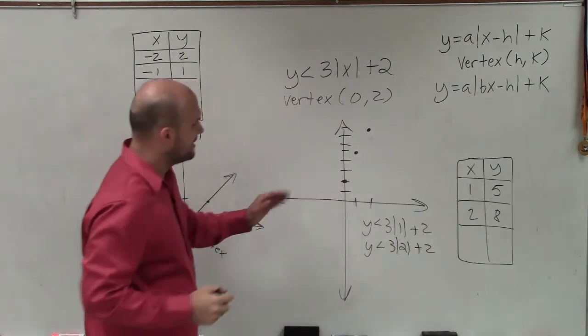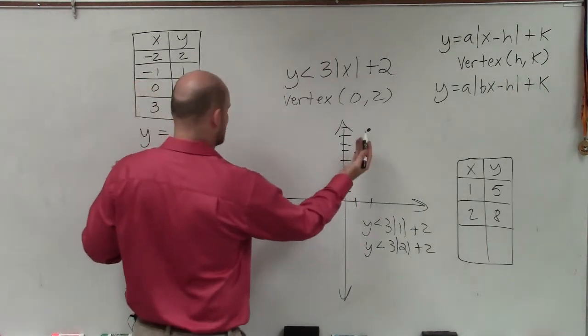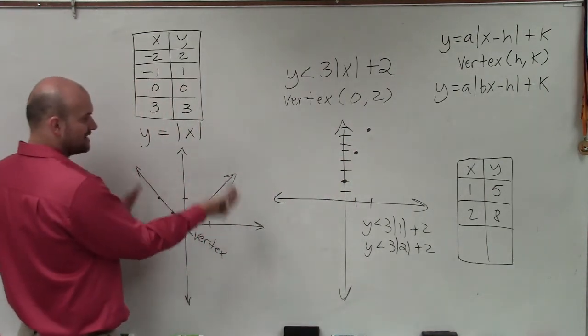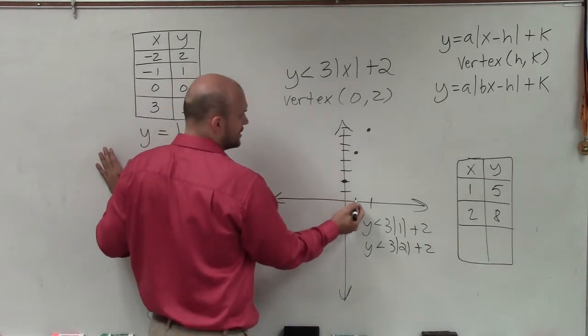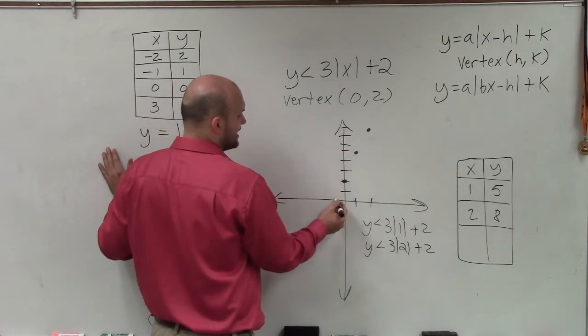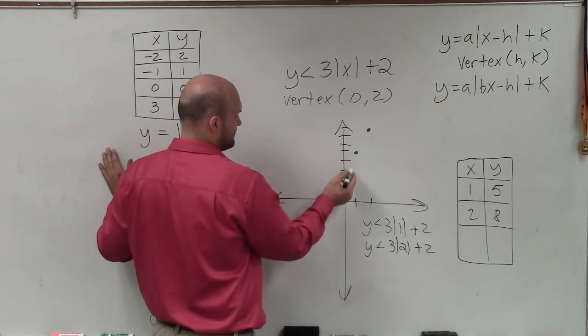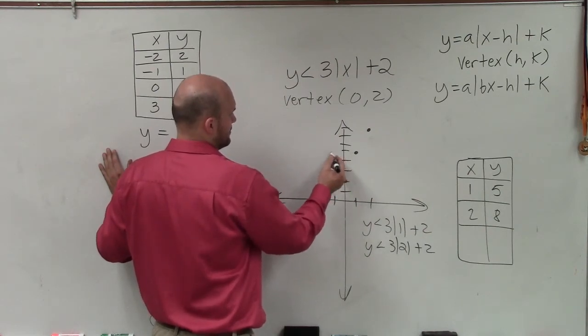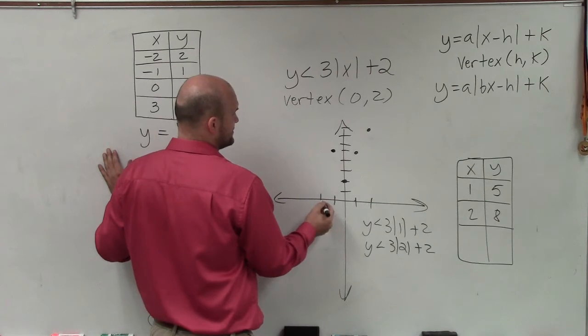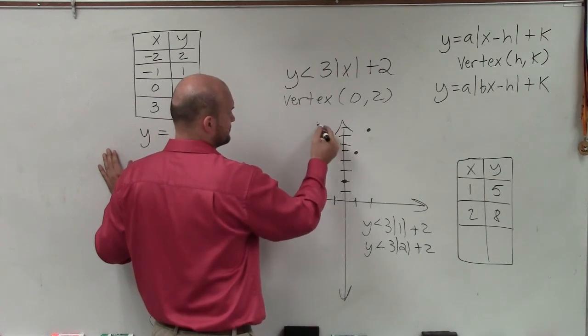OK. And now, so since this is symmetric, I can just reflect it over the y-axis. So instead of going over one, up five, I can go to the left one, up five. And I can go left two, up eight. All right?